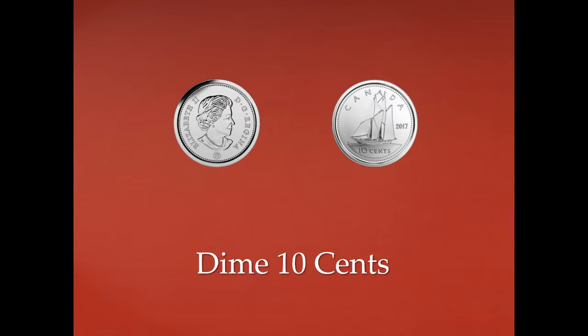A dime is 10 cents. On the head side of the dime we have a picture of Queen Elizabeth the Second, and on the tail side of the dime we have a ship, and that ship is called the Bluenose. Above the ship we have the word Canada, and underneath that it says 10 cents.